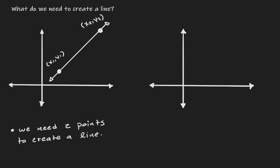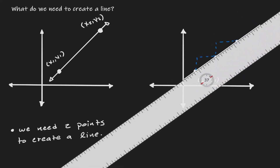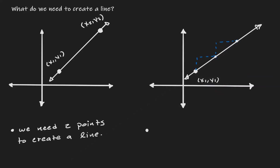Another way that we can also create a line is to just have a point — let's call it x1,y1 — and to also know the slope of the line. Because if we know the slope of the line, we can use that slope to have a direction. And if we have the direction, we can identify other points to connect and also create a line. So all we need is just the point and the slope of the line.